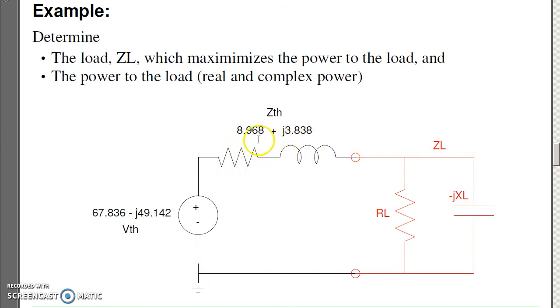To implement 8 minus j 3.8, I can do it in two ways. I can do a series circuit or parallel. Series, this would just be 8.96 ohms and minus j 3.8 ohms. And parallel, I can also do it.